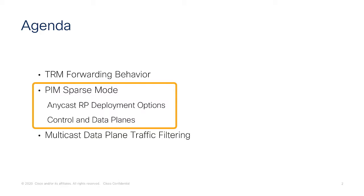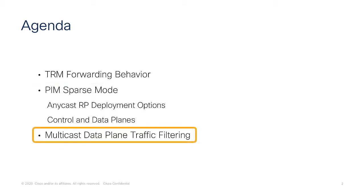We'll then look at how to deploy Anycast RP with multi-site and with ACI in general, which is required to provide redundancy to the RP function needed for PIM sparse mode deployment. Finally, we are going to discuss in more detail how data plane traffic can be established across sites for layer 3 multicast communication, looking at cases where the source and receiver can be inside or outside the multi-site domain.